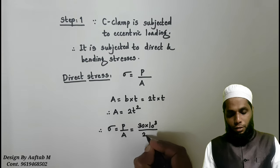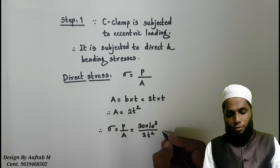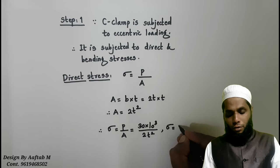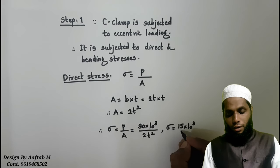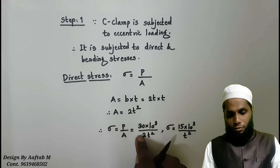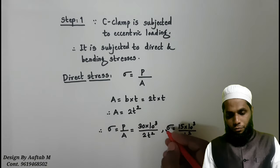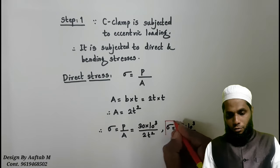We will divide this by 2 and we will get the value of sigma as 15 into 10 raised to 3 divided by T square. In this way, we have this one as equation number 1.